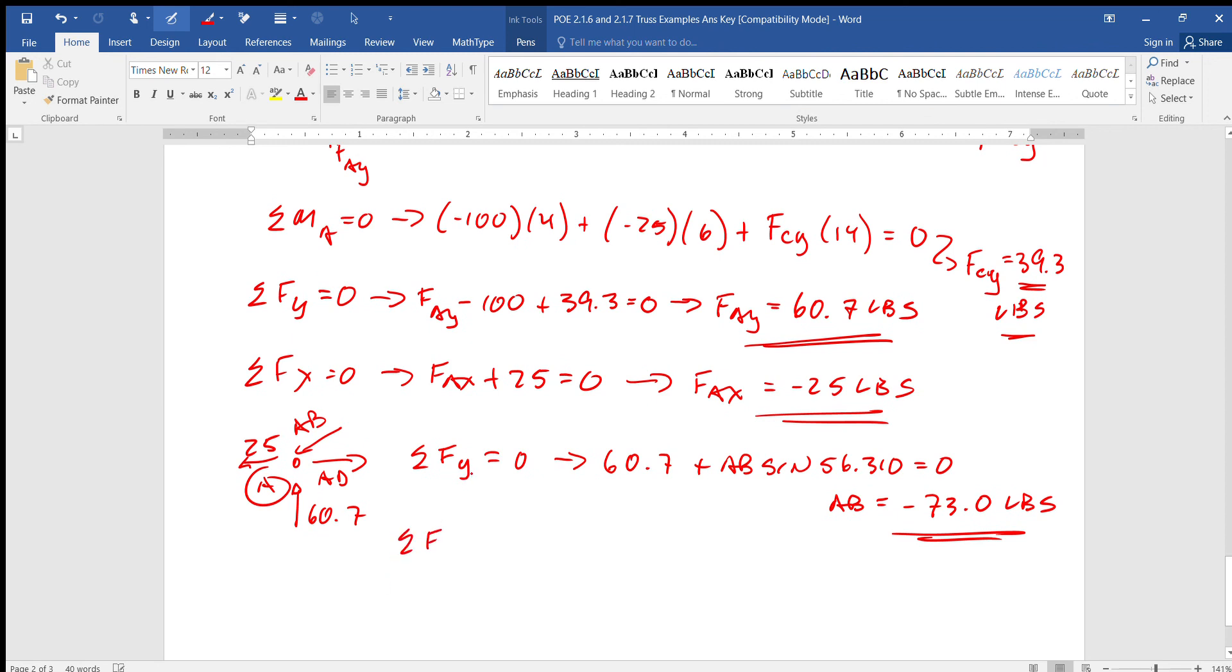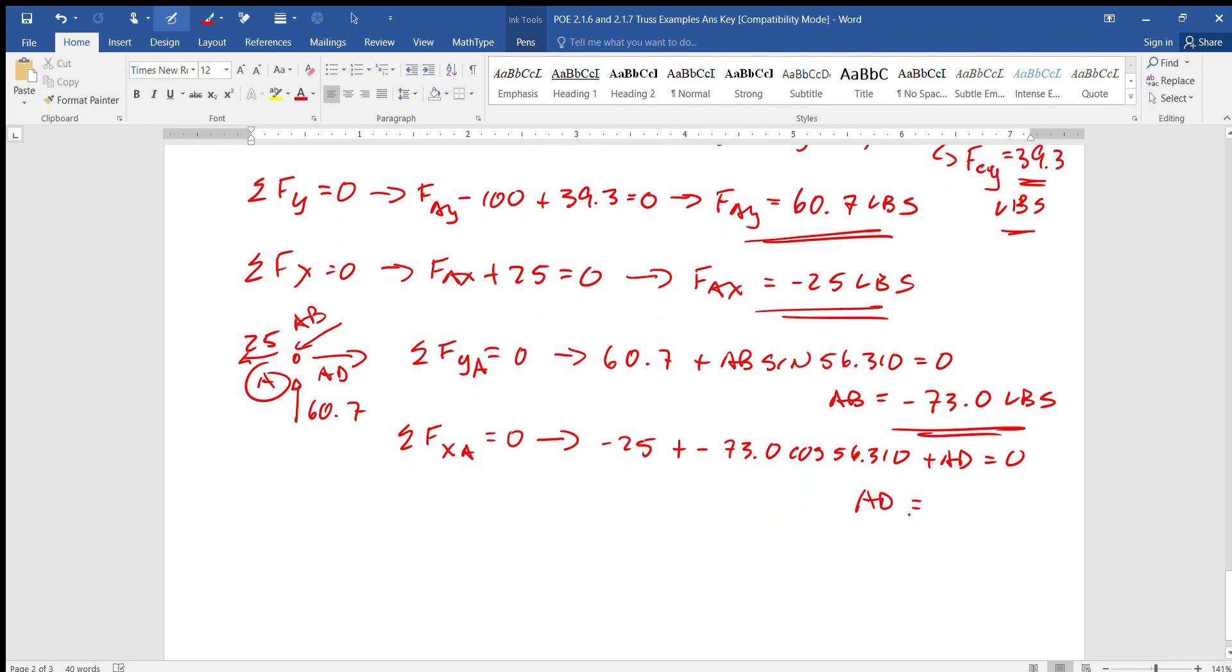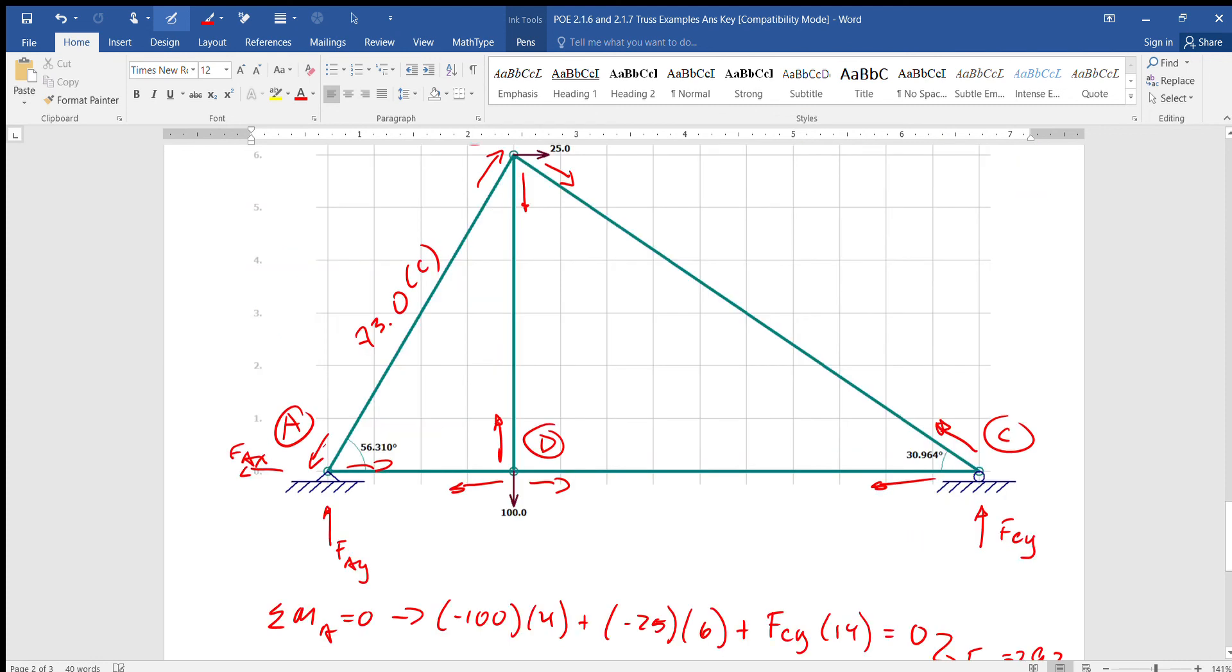And we just said it's 73.0 compression. Now the x's. Sum of the, oh I didn't write it about A, did I? Naughty. Sum of the x's about A equals zero. I apologize for throwing my x's and A's, one time A, one time X. I'm lazy, what can I say. Negative 25 plus, we got more, AB is in a negative, negative 73.0 cosine of 56.310 plus AD equals zero. Therefore AD equals 65.5.